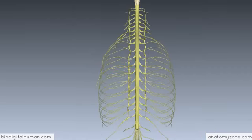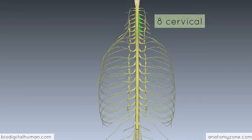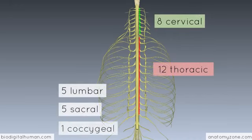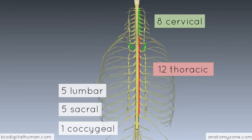The spinal cord is essentially a segmental structure, consisting of 31 segments: 8 cervical, 12 thoracic, 5 lumbar, 5 sacral, and 1 coccygeal segment. These segments give rise to spinal nerves, which emerge on either side of the spinal cord. So you've got 31 segments giving rise to 31 pairs of spinal nerves.